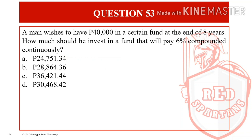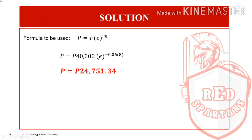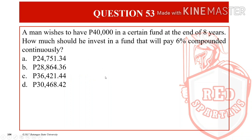For question number 53, a man wishes to have P40,000 in a certain fund at the end of 8 years. How much should he invest in a fund that will pay 6% compounded continuously? For continuous compounding, the formula is P = F × e^(−Rn). When finding P, the exponent is negative. Substituting: P = P40,000 × e^(−0.06 × 8) = P24,751.34. Letter A for question number 53.